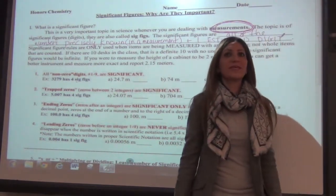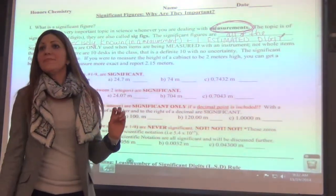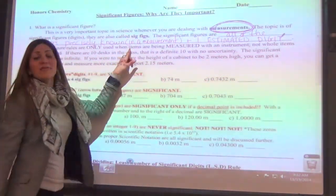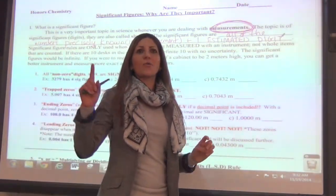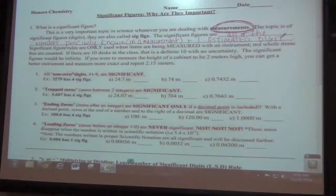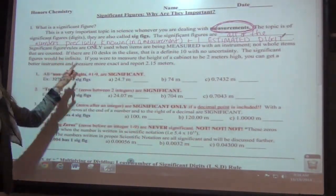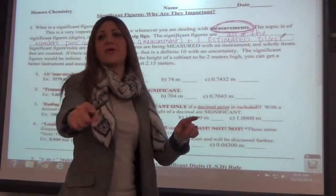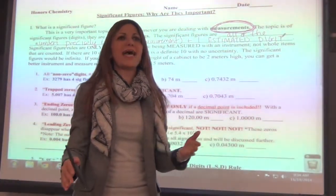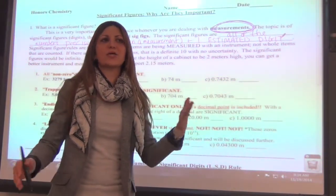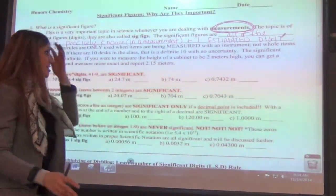Sig figs are only used when you're measuring something. If you count something — for example, if we counted that there are 10 desks — you don't use sig figs because it's exactly 10, and if I wanted to say 10.0000 it would repeat forever. I've got exactly 10 desks.